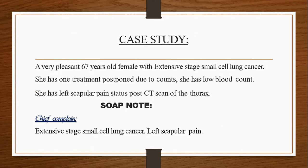A 67-year-old female with extensive stage small cell lung carcinoma. She has had one treatment postponed due to low blood count. She has left scapular pain and a post-CT scan of the thorax. Let's make a SOAP note on the case.